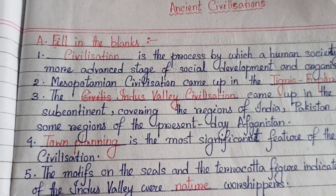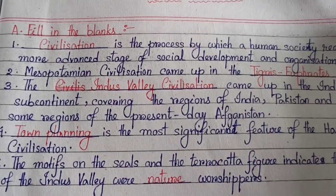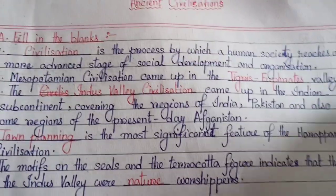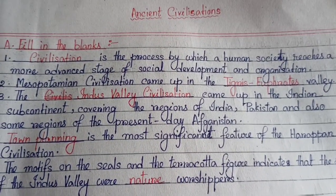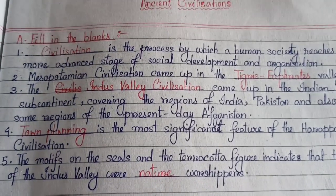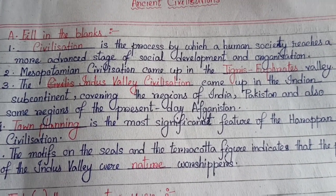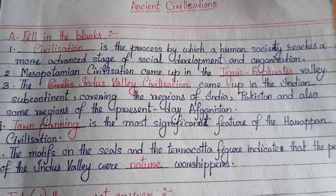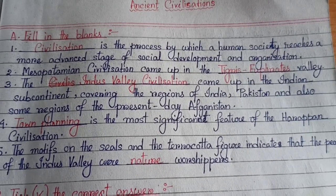First, we have some objectives. Section A: Fill in the blanks. Number one: Civilization is the process by which a human society reaches a more advanced stage of social development and organization. Number two: Mesopotamian civilization came up in the Tigris-Euphrates valley.